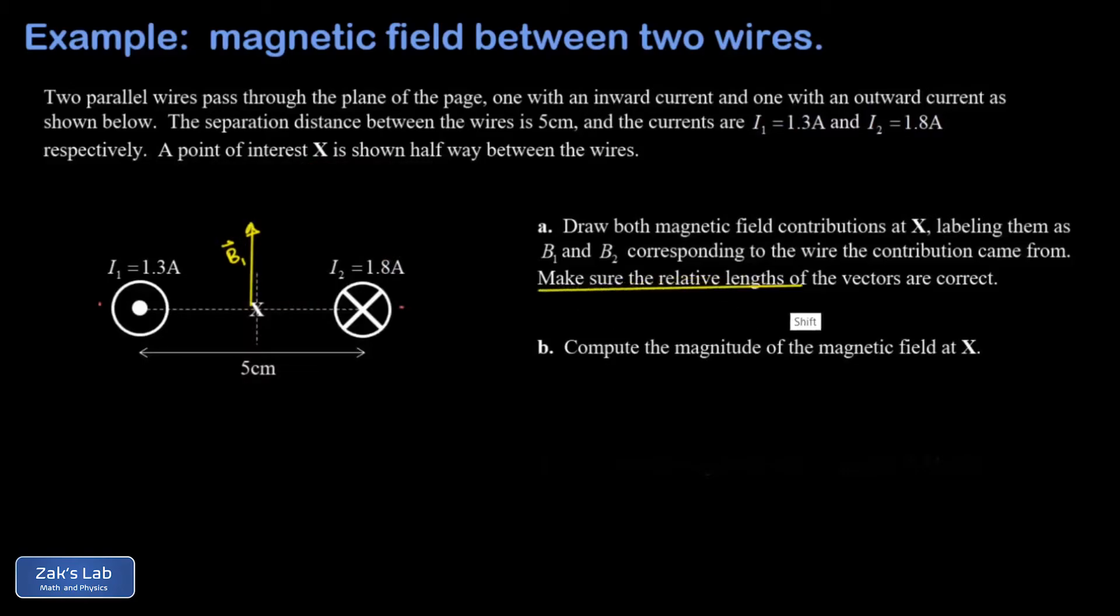We were told to make sure the relative lengths of these vectors are correct. Because this field is generated by a larger current, the same distance from its wire, that's going to be a larger magnetic field contribution.